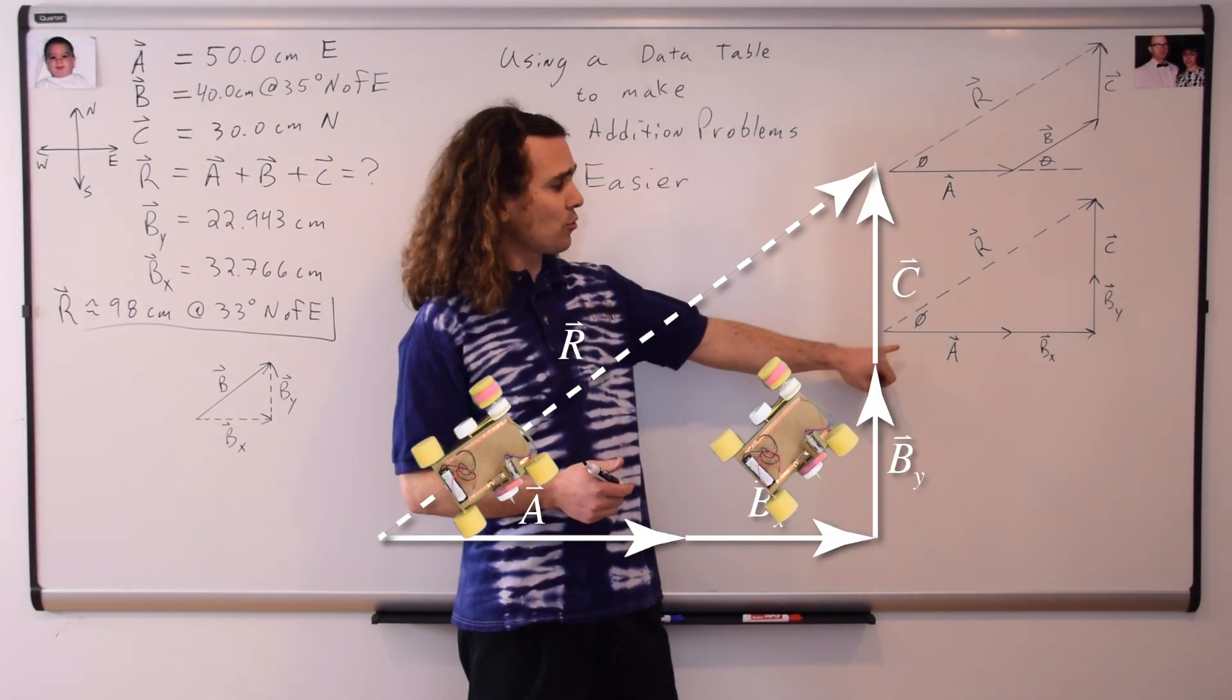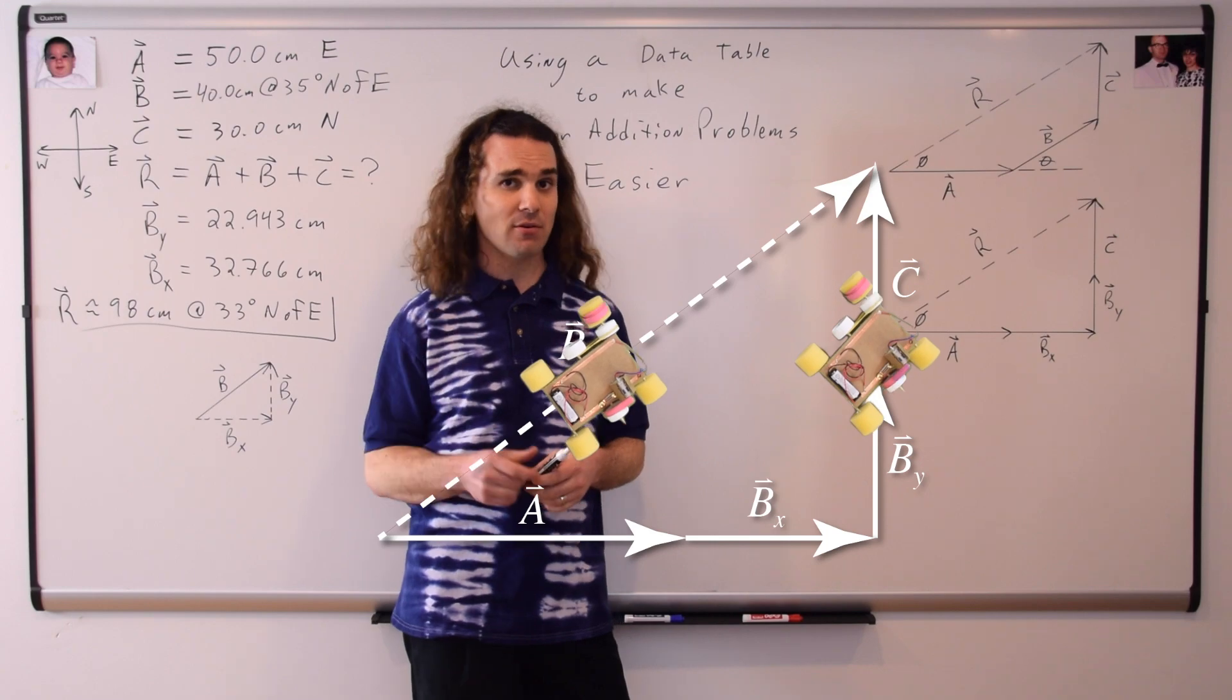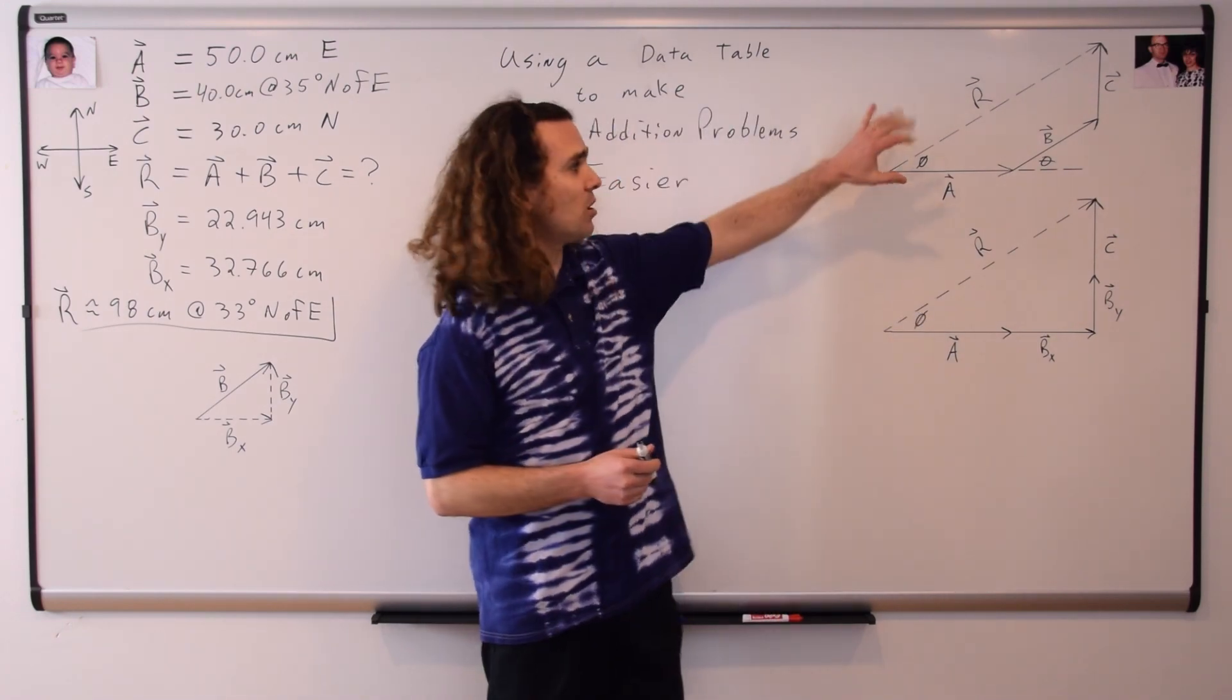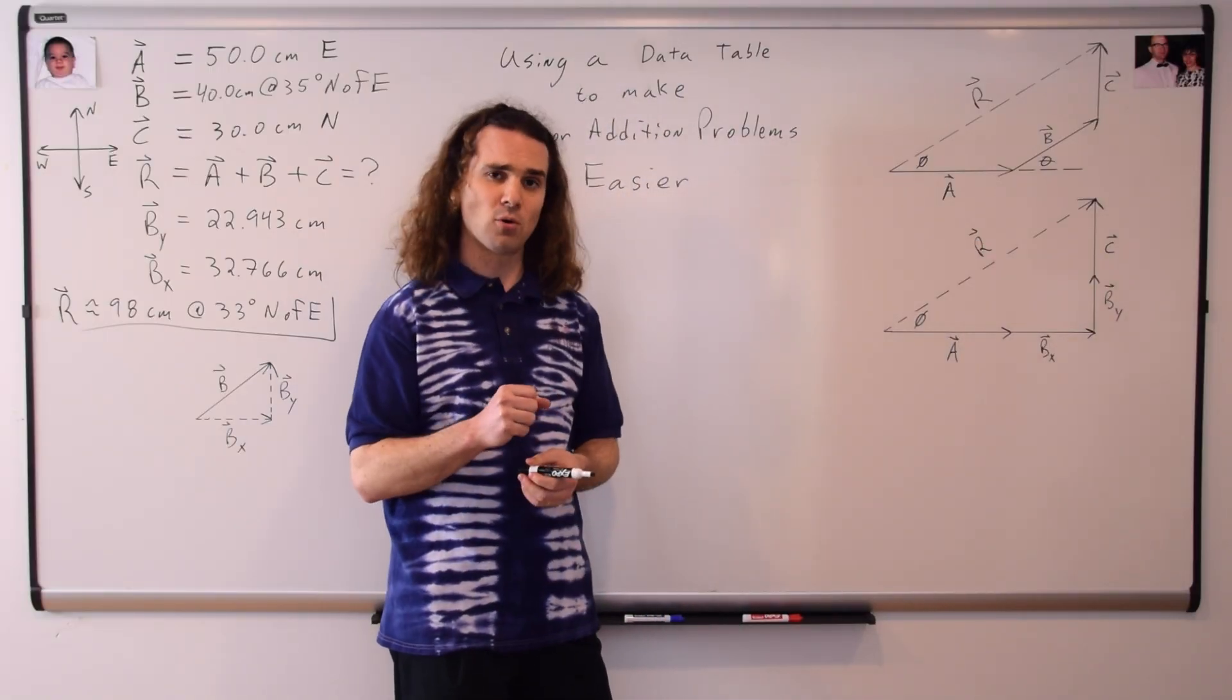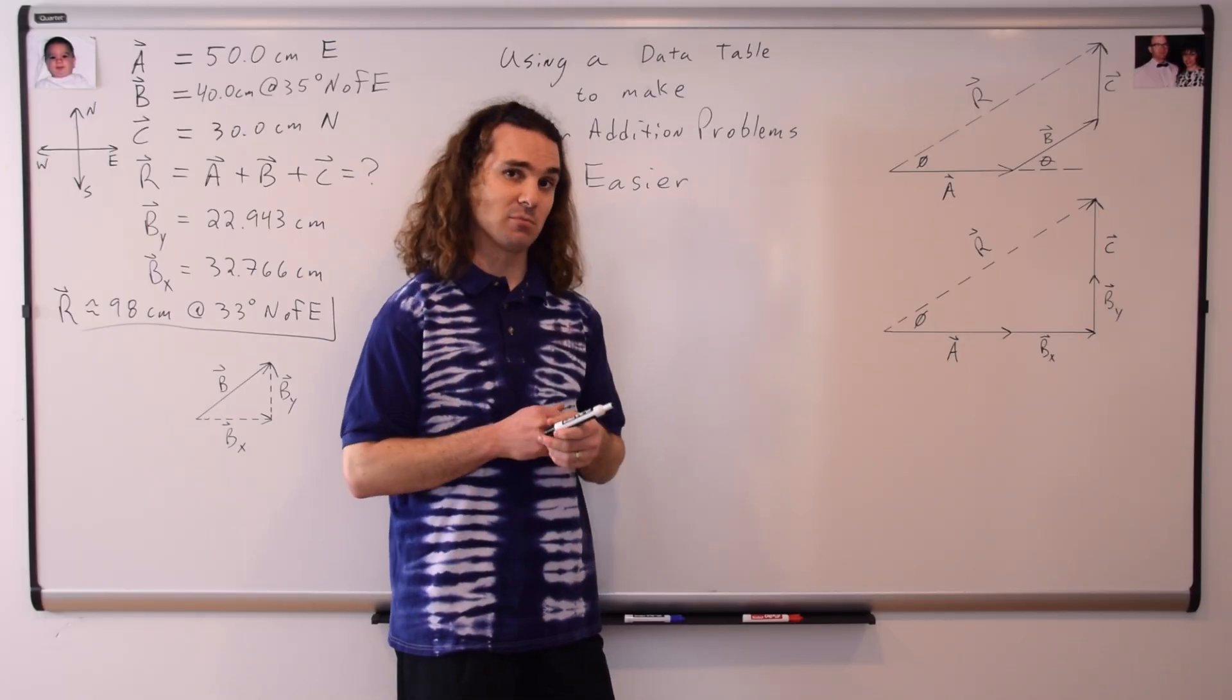Once we did that, we redrew our vector diagram and we had a right triangle, so we were able to use Sokotoa and the Pythagorean Theorem to figure out our resultant vector. Now, I did have to draw the vector diagrams a little bit smaller this time in order to make more space on the board, and what we're going to do now is we're going to look at the same problem using a data table.